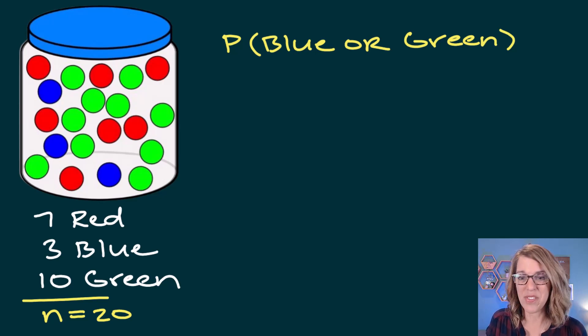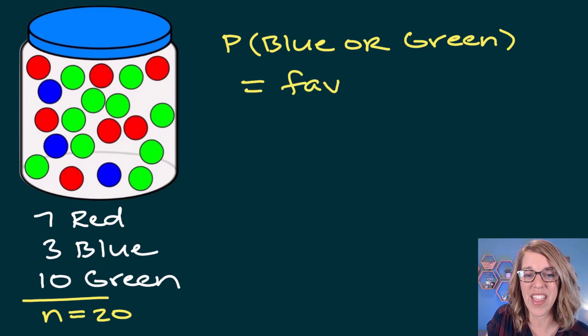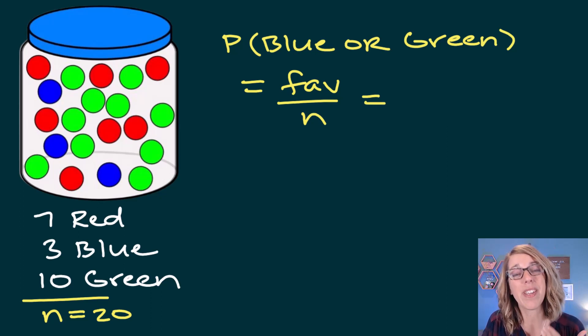Now I know that when I do this probability, I again need favorable out of total. I'm just going to go fav out of n, where n is my total. The favorable is going to be all of the blues or all of the greens, so I'm going to add those two totals together.